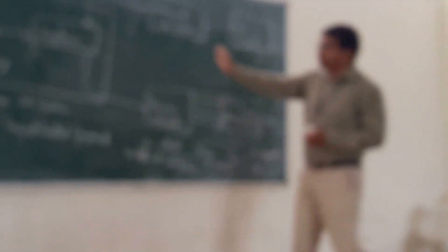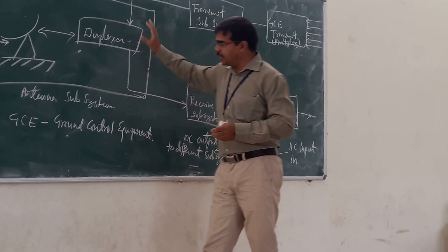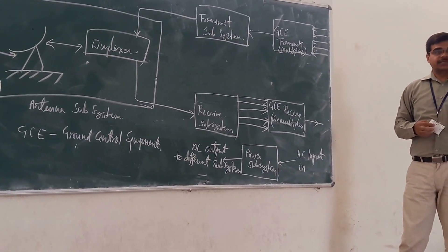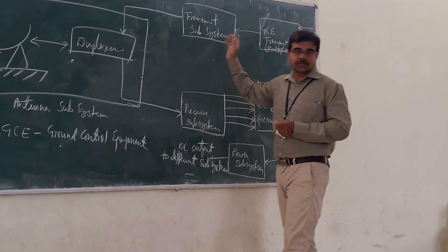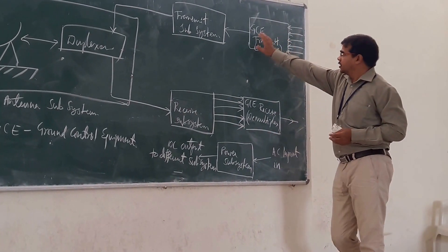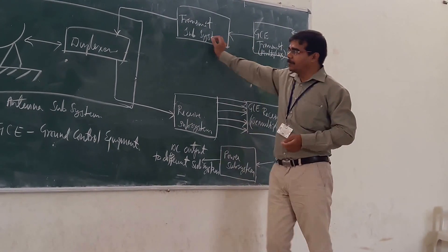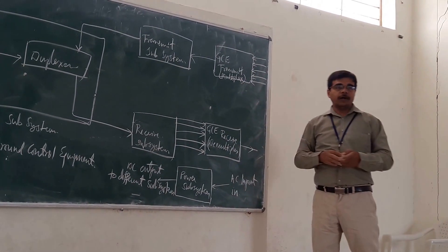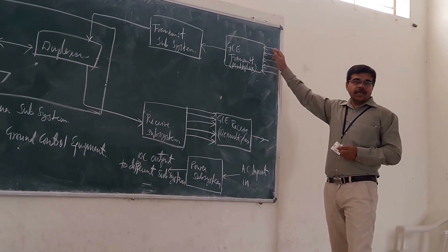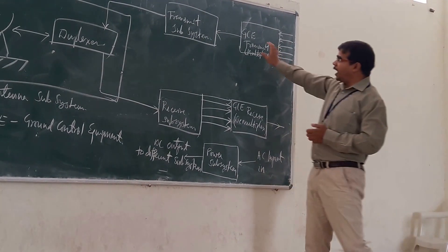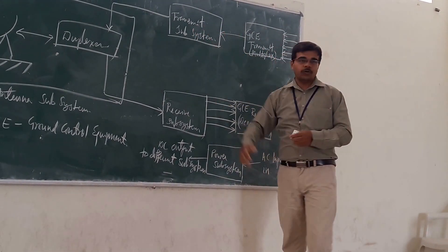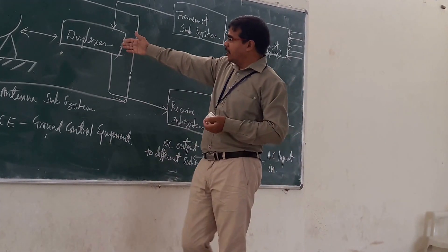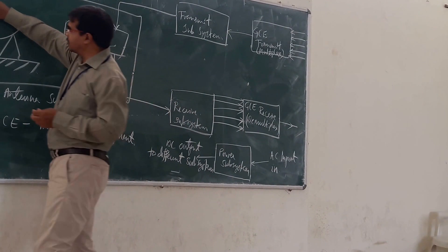Considering the transmitter section, it consists of three blocks: GCE transmit, transmit subsystem, duplexer, and finally the antenna. Here we are having multiplexing — many signals are combined, they are modulated, and after modulation we go for high power amplification. Then we pass the signal through the electronic switch (duplexer), and the signal is transmitted via the antenna.